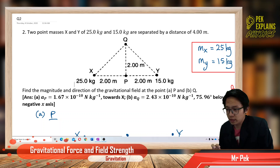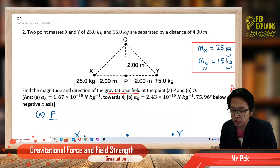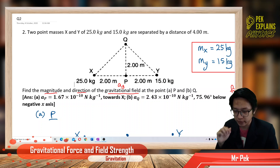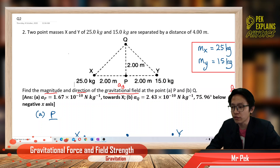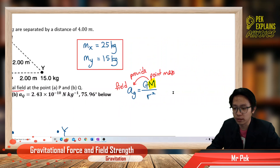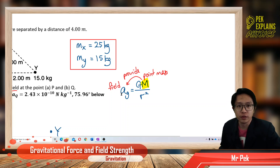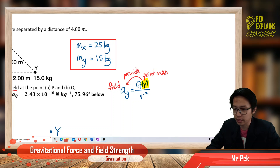What the question requires us to find is the gravitational field, which is AG. We want to find the magnitude and direction, so this is a vector. The gravitational field formula is GM over R squared. The mass here is the point mass that provides the gravitational field — make sure you use the correct mass. Use the point mass, not the test mass.